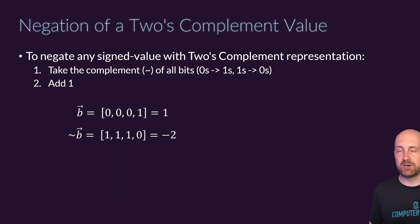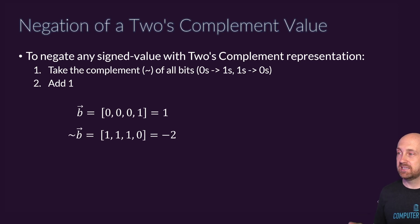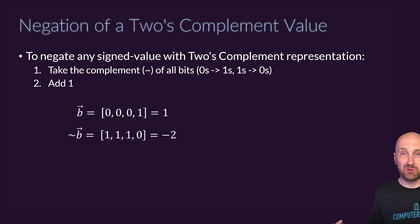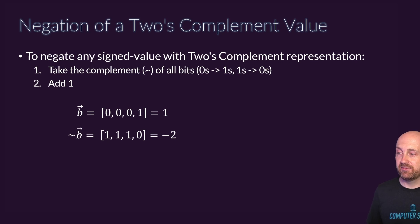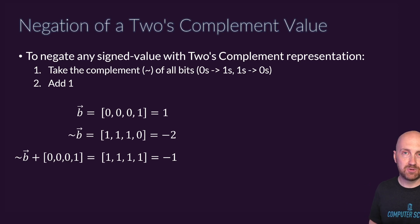First, we take the inverse of our bit field — the ones' complement. Imagine we have zero, zero, zero, one, representing the value one. The first step to negate it and get negative one is to flip all our bits. After flipping, we get one, one, one, zero — notice that's negative eight plus four plus two, which is negative two. So how do we get from negative two to negative one? We add one. We add one value onto the complement of our original bit field. To negate a two's complement number: flip all the bits, then add one.